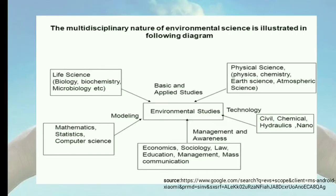This diagram shows the multidisciplinary nature of environmental science. If we connect environmental studies to life science, we can study the biotic components of environment. It is connected to physical science by studying the physical nature of our atmosphere and different layers of earth. We can connect it with mathematical models, and also with economics, sociology, education, management, and mass communication.